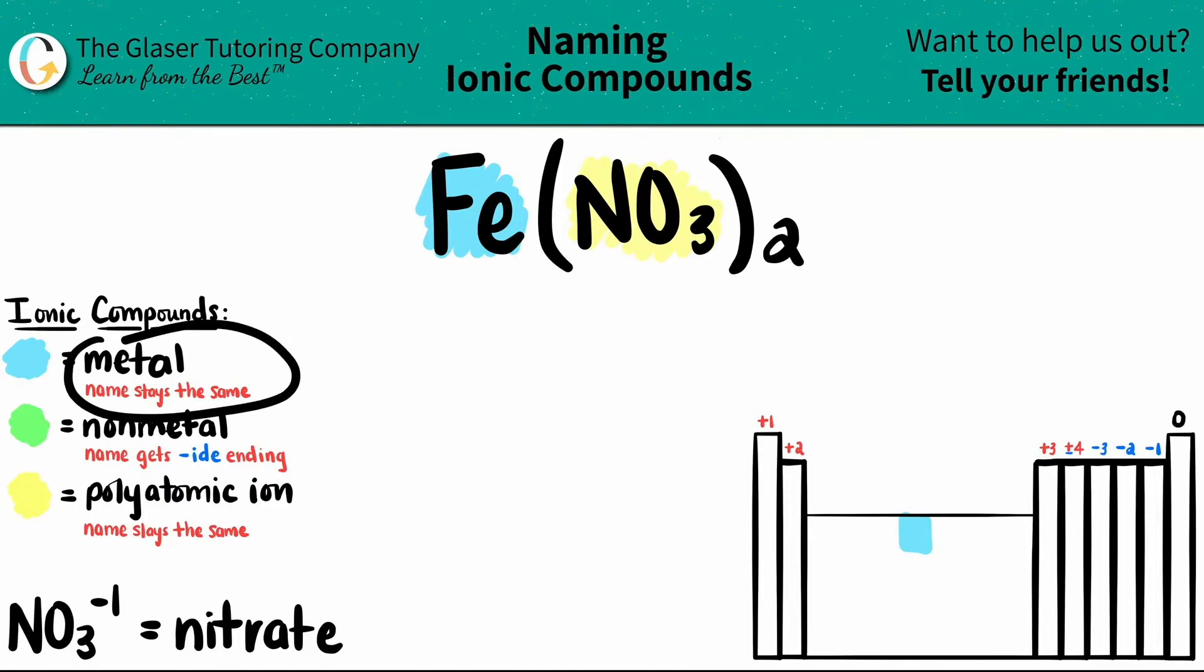The metal name always stays the same. So in this case, it's Fe, and I know that Fe is iron. So I just write iron.